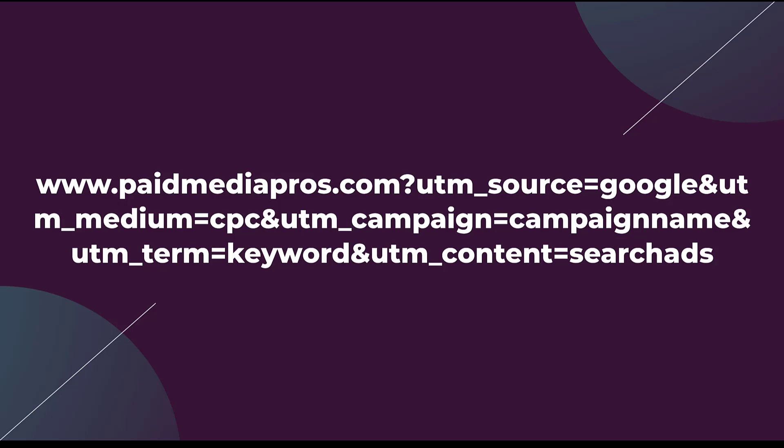We then have a handful of parameters in here, which are going to be designated by UTM underscore. So we've got UTM underscore source equals Google, and then you'll see there's an ampersand and then UTM medium equals CPC. Basically that ampersand means that the first tracking parameter — UTM source equals Google — is finished and the new tracking parameter begins. That's a way to segment them out.